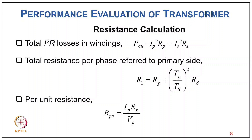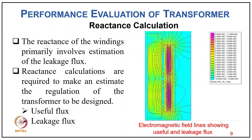The total resistance per phase referred to primary R1 equals Rp plus (Ts/Tp)² × Rs, and the per unit resistance RPU equals Ip×Rp divided by Vp.